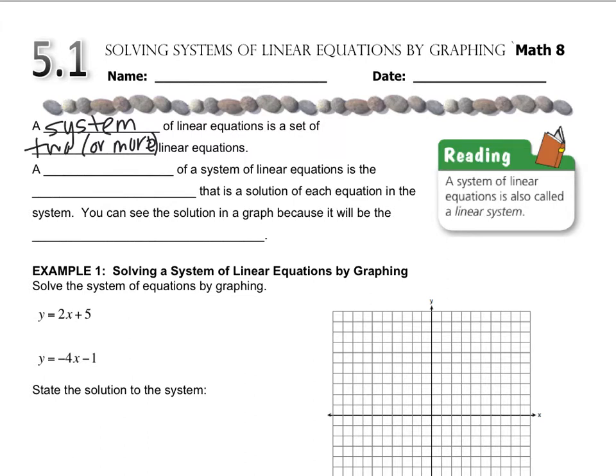What we're trying to find is something called the solution. A solution to a system is the coordinate point that is a solution to each equation. We're going to find the point that checks in both equations. You can see this solution on a graph very easily because it will be the point where they cross. I'm going to call that the point of intersection.